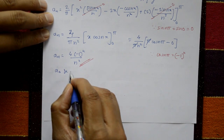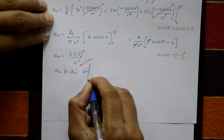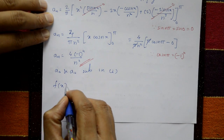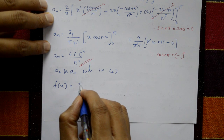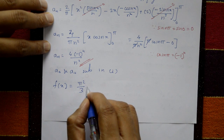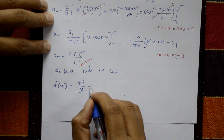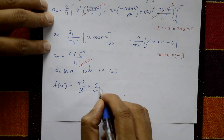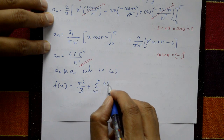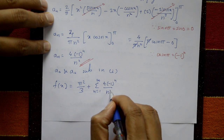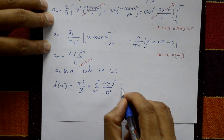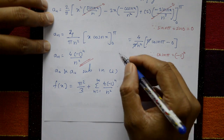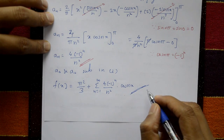Substituting a₀ and aₙ back into equation 1, the Fourier series for f(x) = x² is: f(x) = π²/3 + summation n=1 to infinity of [4·(−1)ⁿ/n²] cos(nx). Since bₙ = 0 (even function), this is the required answer.